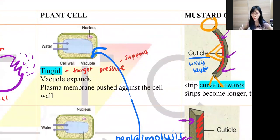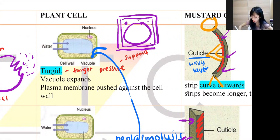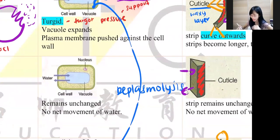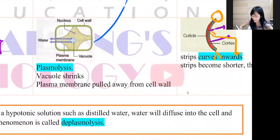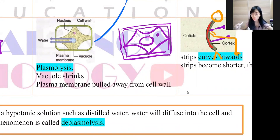For plant cell with turgid, draw a cell wall and a plasma membrane, then draw a big vacuole. You can put dots to represent cytoplasm. For plasmolysis, draw two membranes — the plasma membrane pulling away from the cell wall — with a smaller vacuole and dots to represent the cytoplasm.